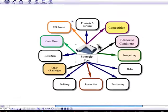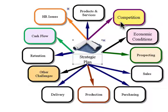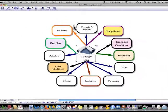If a company is going to do a strategic plan, it's going to include a variety of things: products and services, competition, economic conditions, prospecting, sales, and so on. Let's look at just one of those. Let's look at HR issues.